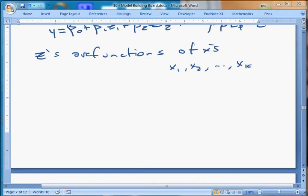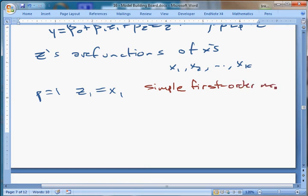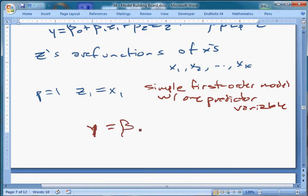So we have beta0 plus beta1z1 plus beta2z2 plus dot dot dot, betapzp plus epsilon. Now each of these independent variables, each of these z's, are functions of x's. This generalization allows us to explore a very large number of potential relationships.